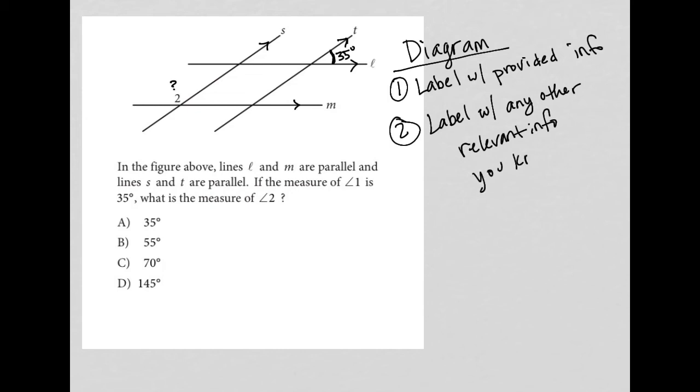is to label with any other relevant information you know. So in this case, we know that we have two parallel lines in L and M, another set of parallel lines in S and T. We know that angle 1 is 35. So what else do we know? What's that any other relevant information?